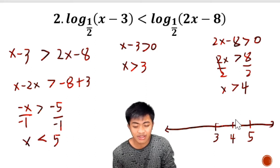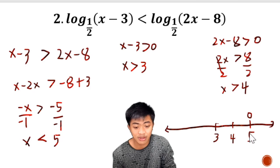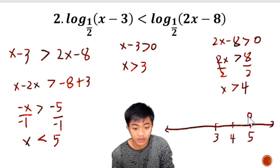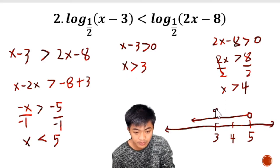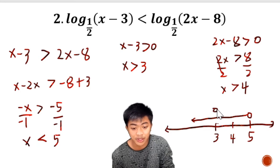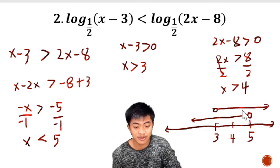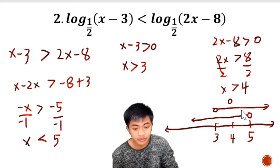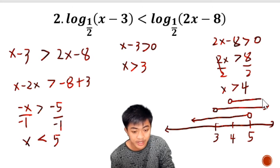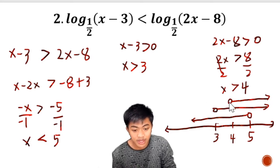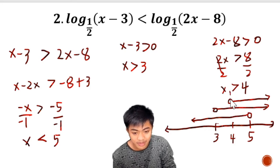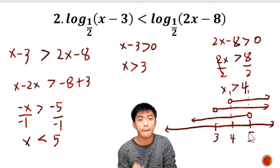We plot the intervals on the number line. For x less than 5: 5 is not included, so we use an open circle and shade to the left. For x greater than 3: open circle at 3, shade to the right. For x greater than 4: open circle at 4, shade to the right. We look for the region where all three intervals have common solutions — their intersection.